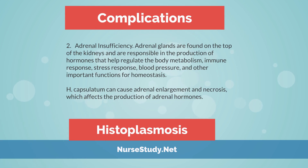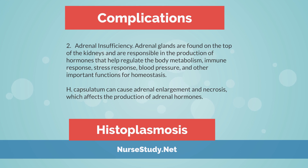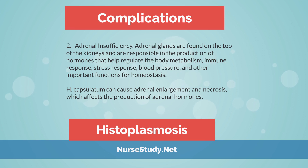2. Adrenal Insufficiency: Adrenal glands are found on top of the kidneys and are responsible for the production of hormones that help regulate body metabolism, immune response, stress response, blood pressure, and other important functions for homeostasis. Histoplasma capsulatum can cause adrenal enlargement and necrosis, which affects the production of adrenal hormones.